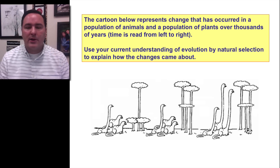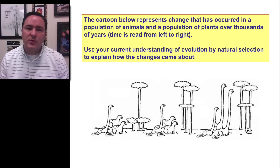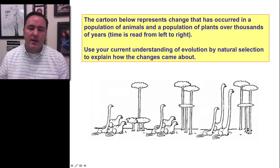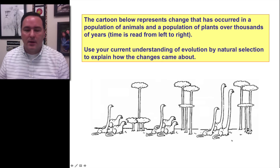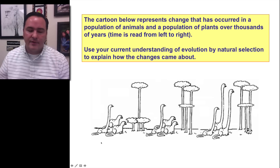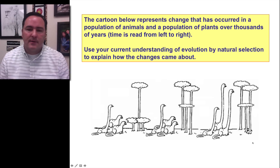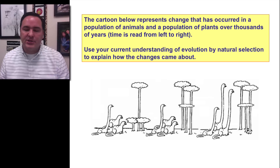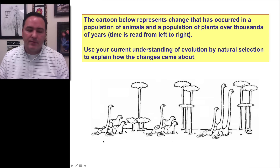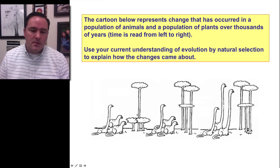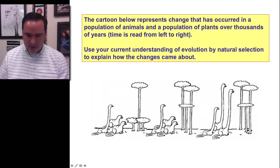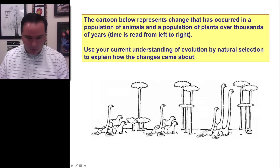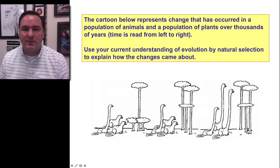So the final thing we want to look at is this cartoon. If we're saying that time is proceeding from this side of the cartoon over to this side, how could you explain the changes in both the dinosaurs and the trees from this side to this side? Over here, there are dinosaurs of different lengths, and there are trees that are really tall and really short. Which trees are all of these dinosaurs going to most easily be able to forage upon?